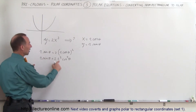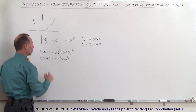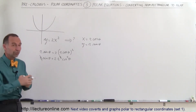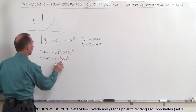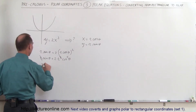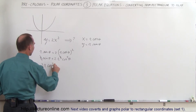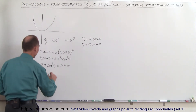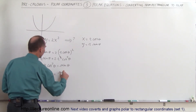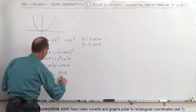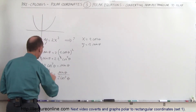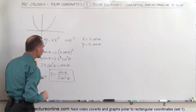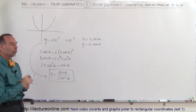Right away we see an r on the left side and an r squared on the right side, so one r cancels, and now we have to solve this equation for r because we want to write r in terms of theta. Turning the equation around, we have 2 times r times the cosine squared of theta is equal to the sine of theta. Dividing both sides by 2 times the cosine squared of theta, we get r is equal to the sine of theta divided by 2 times the cosine squared of theta. So y equals 2x squared converts to r equals sine of theta divided by 2 times the cosine squared of theta.